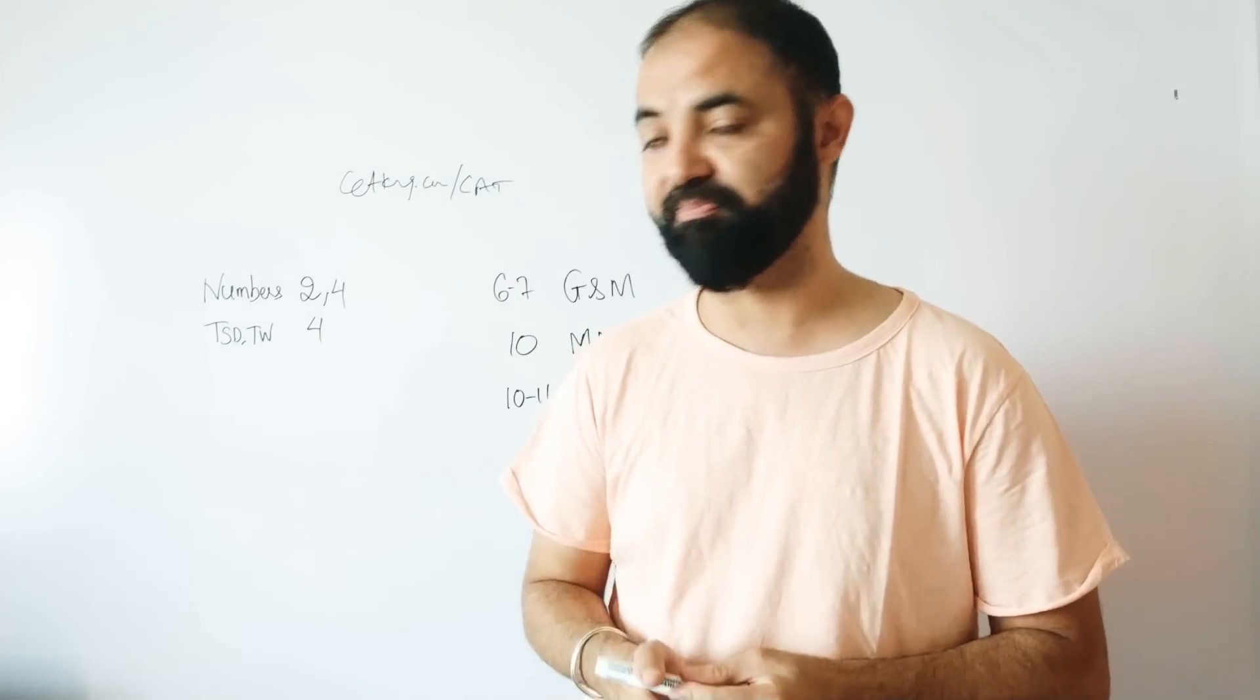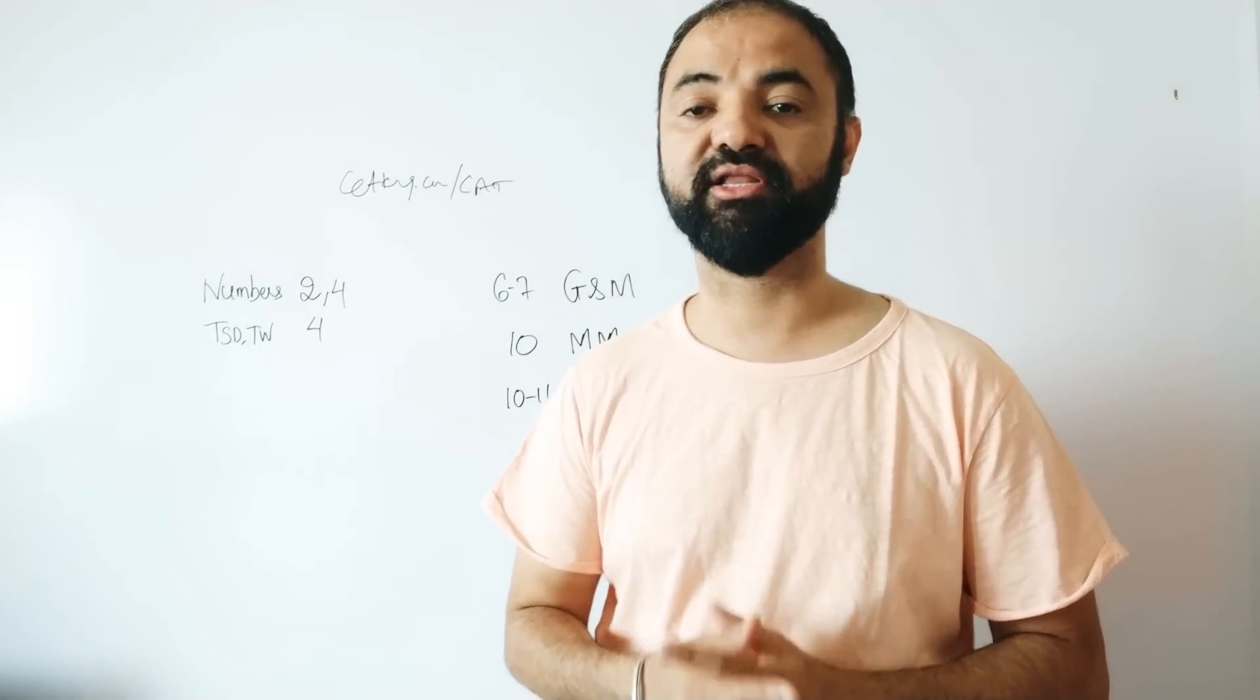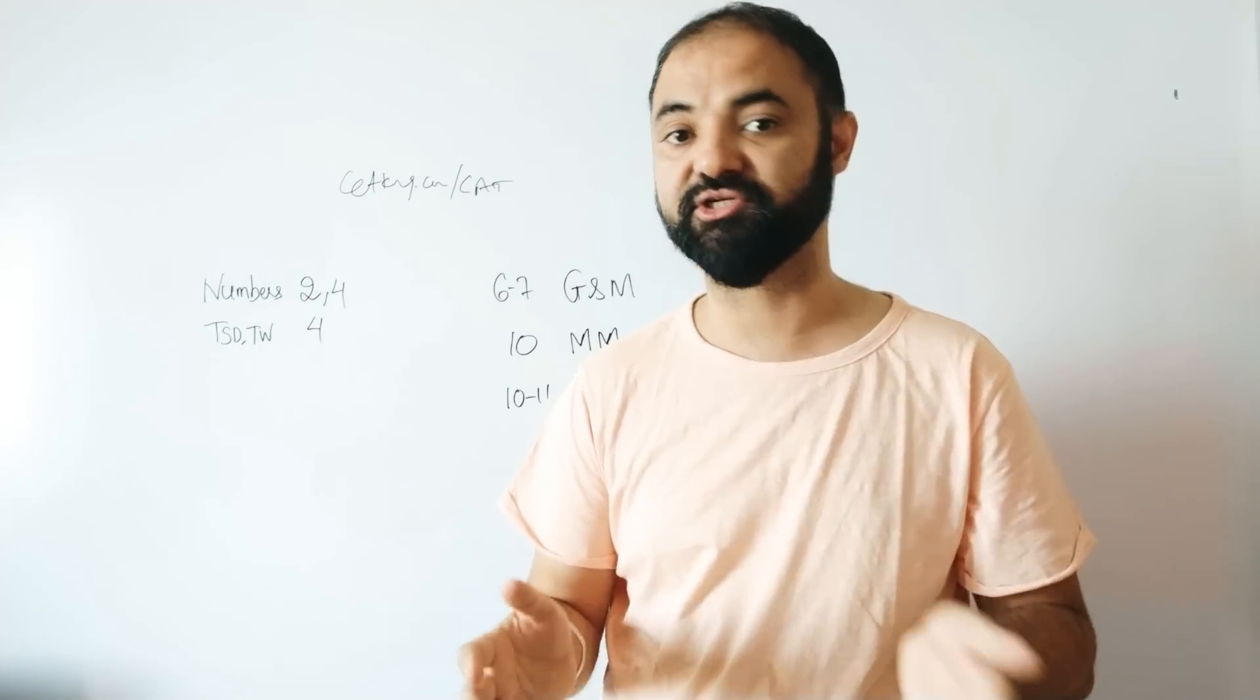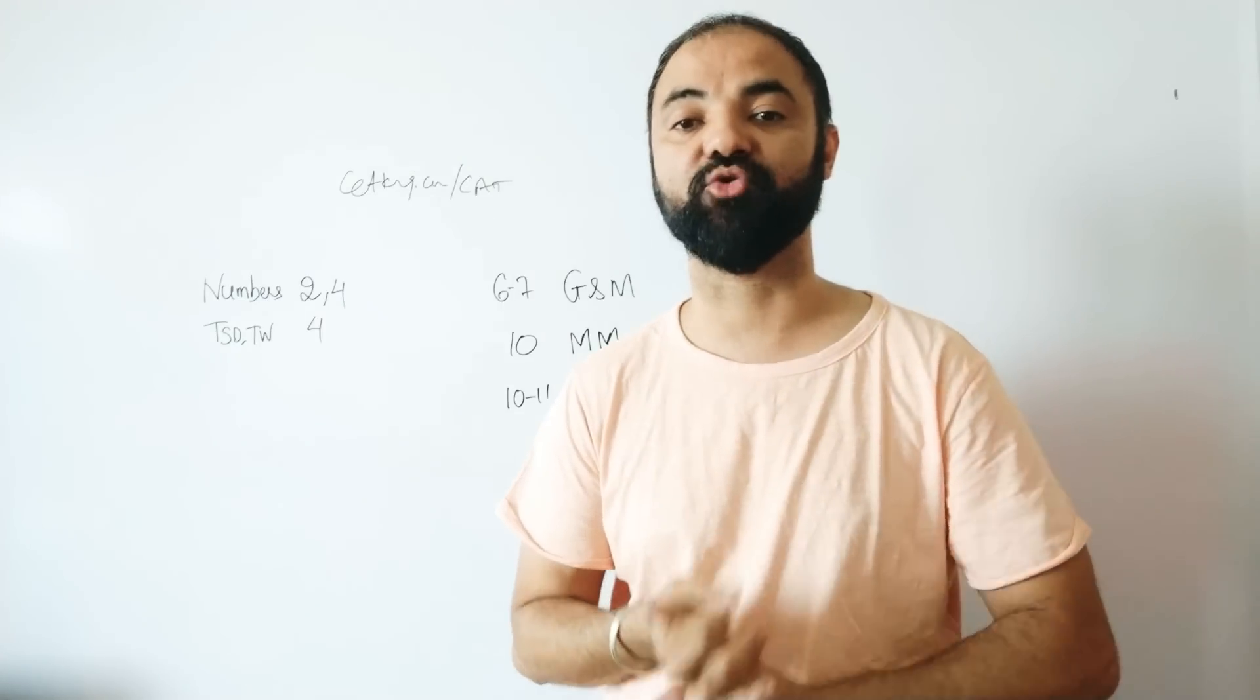Arithmetic is the last topic - again 10 to 11 questions. Arithmetic means profit, percentages, profit & loss, ratios - everything together is 10 to 11 questions. That's the complete breakup of 34 questions in the CAT paper. Now you have to plan your study accordingly. Your target is to get 20 questions correct - not today or tomorrow, but on the exam day.